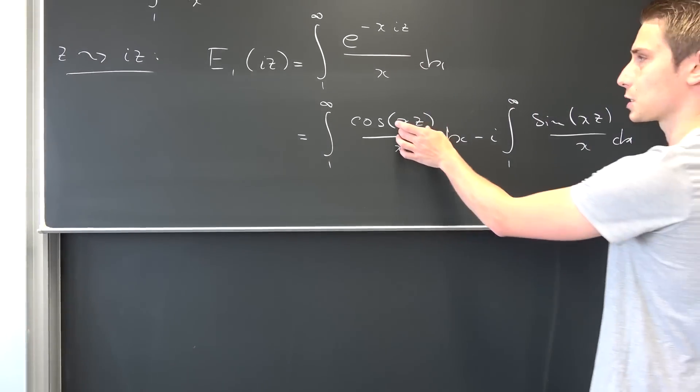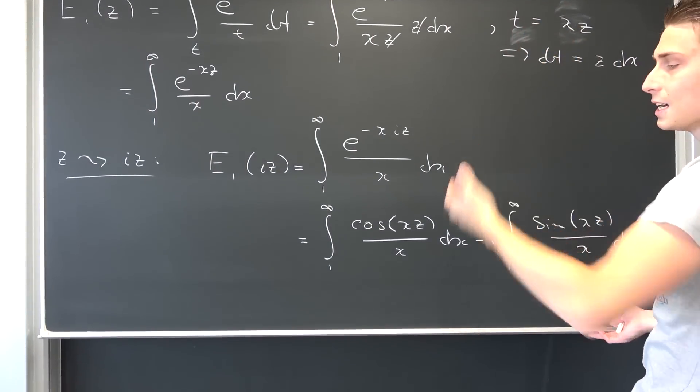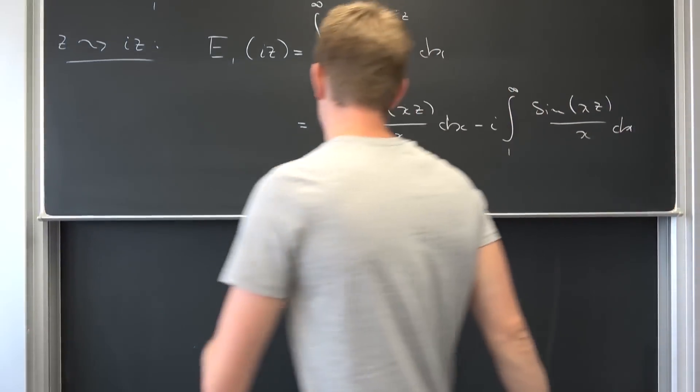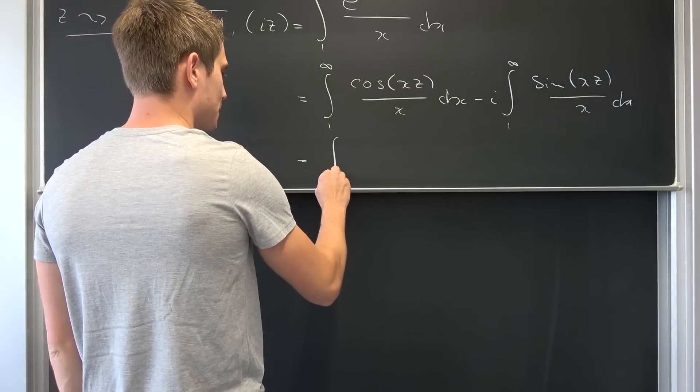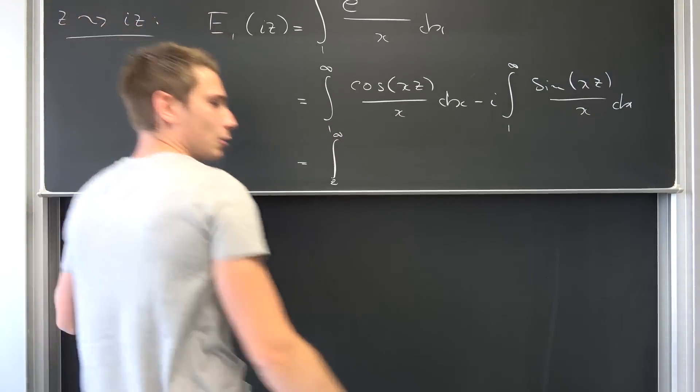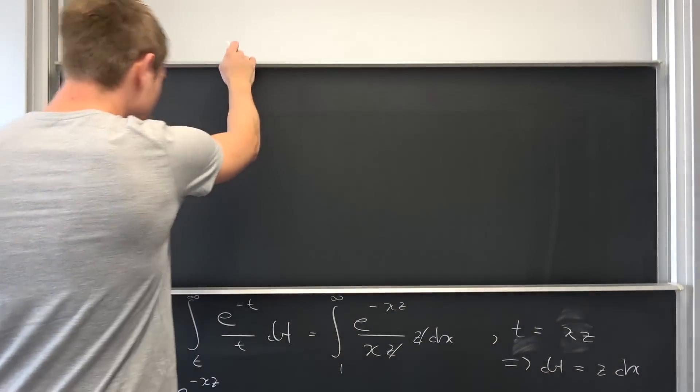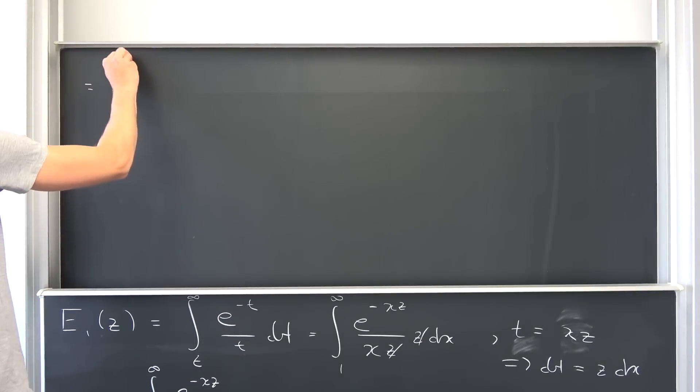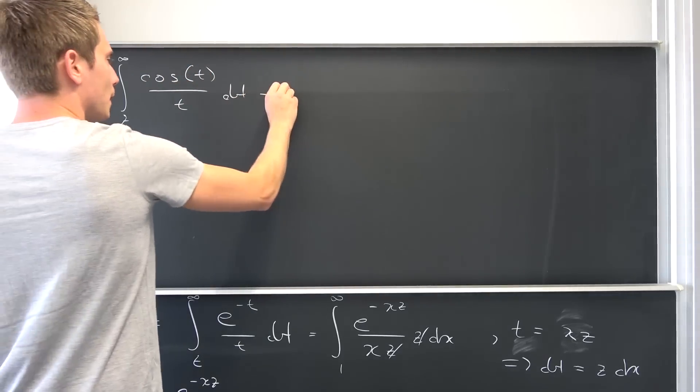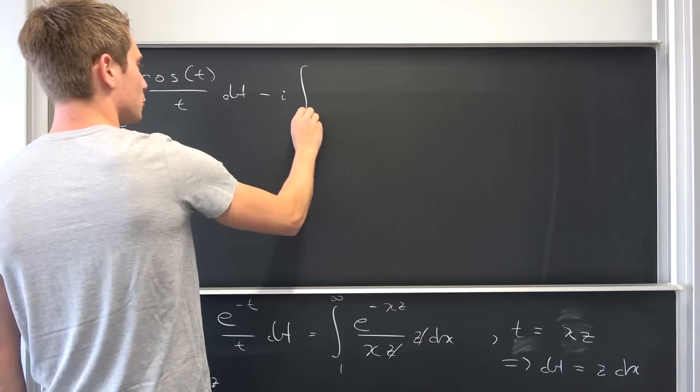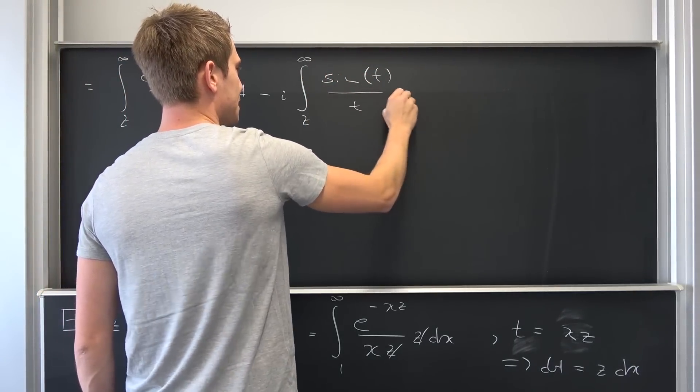What I would like to do, I would like to bring this back to our original form. Now we can do this backward substitution, introducing this yet again, to get back to our original t. Meaning, if we were to do all those calculations back, we would end up with an integral from z to infinity. Let me get to a different chart board. Ending up with the integral from z to infinity, cosine of t over t dt, minus i times the integral from z to infinity of the sine of t over t dt.